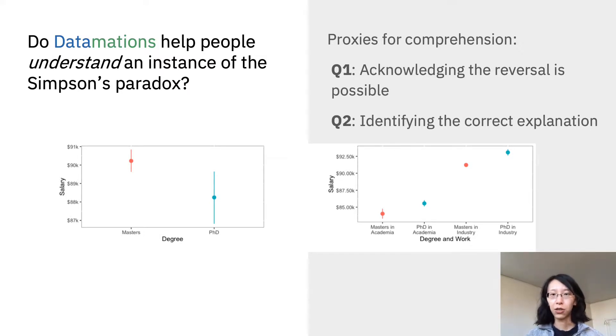the reversal being the reverse trends in the salary dataset, as shown here. And the second question asks participants to pick out the correct explanation that resolves the Simpson's paradox.